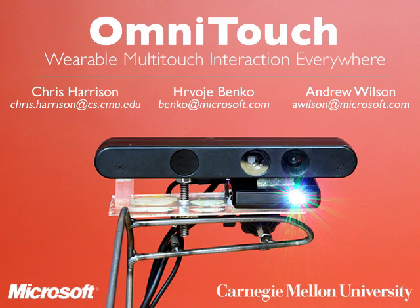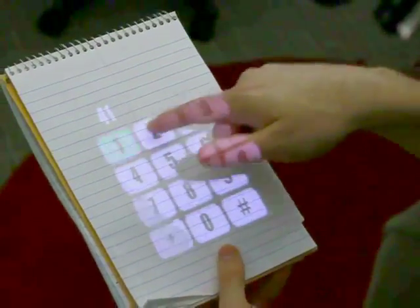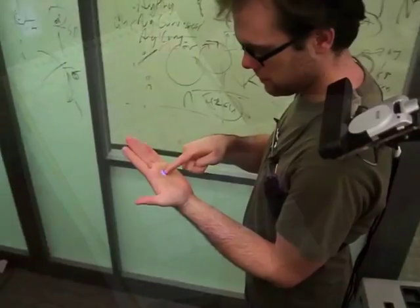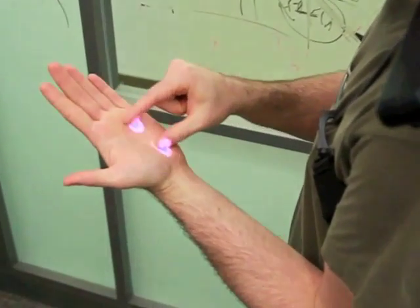OmniTouch uses a depth camera-driven template matching and clustering approach for multi-touch finger tracking on everyday surfaces, including walls, doors, tables, notepads, books, and even one's own body.